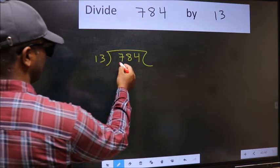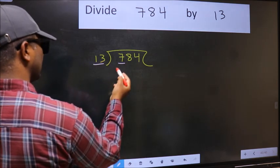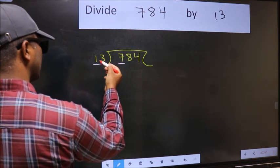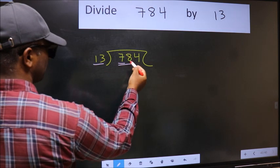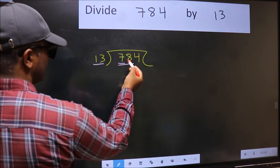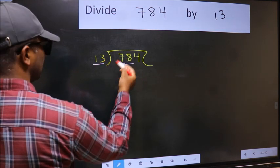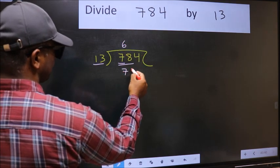Here we have 7 and here 13. 7 is smaller than 13, so we should take two numbers, 78. When do we get 78 in 13 table? 13 times 6 is 78.